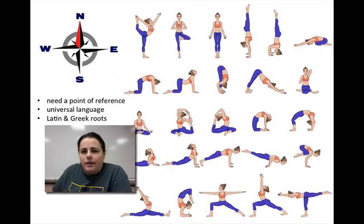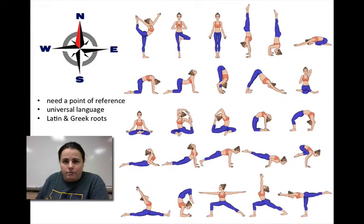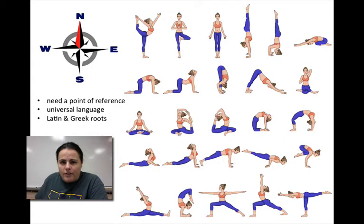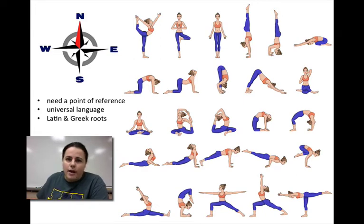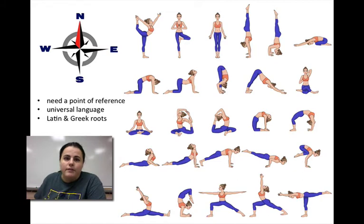The human body can contort itself into hundreds of different positions, and when you're learning anatomy, you have to have what's considered a reference point — the one key position that everything is learned and based off of. If we didn't do this, then everything would be confusing, just like if we didn't have a compass knowing which way was always north, south, east, and west — reading a map or finding your way around would be very difficult.